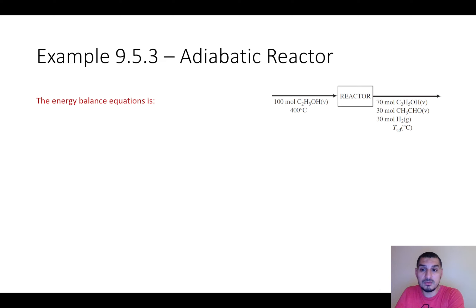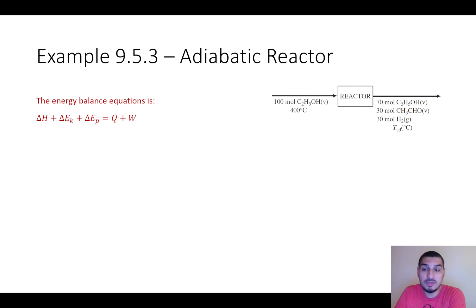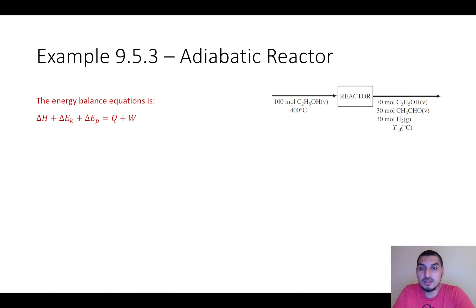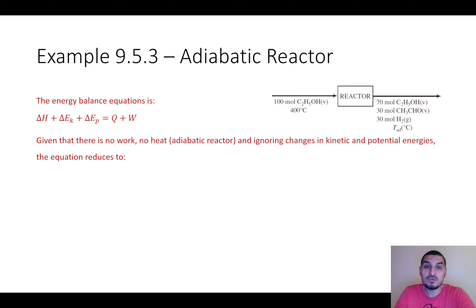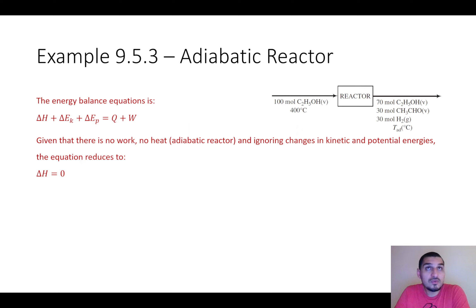Next we apply the energy balance equation: delta H plus changes in kinetic and potential energy equals Q plus W. There is no work because it is a reactor, we ignore kinetic and potential energy changes as they are negligible, and Q equals zero because it's an adiabatic reactor — perfectly insulated, no heat lost to or gained from the surroundings. The equation reduces to delta H equals zero.